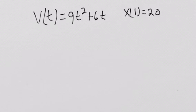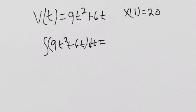Now we're going to integrate velocity to get our position function with a plus c. 9t squared plus 6t is going to equal 3t cubed by the reverse power rule plus 3t squared plus c.